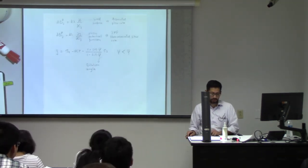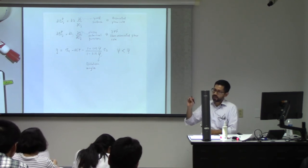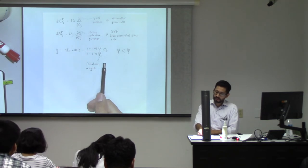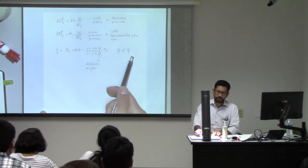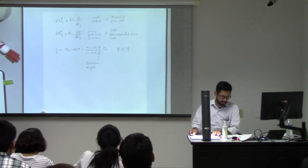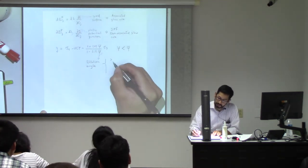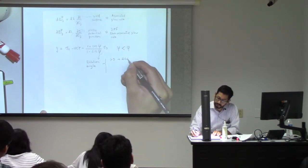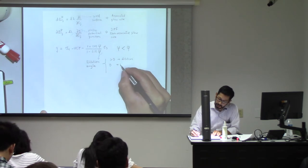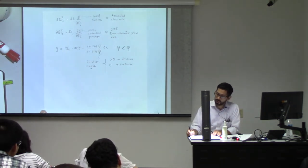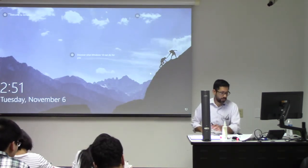The dilation angle is also a parameter you can fit to actual data. In order to predict yield stress we use the Mohr-Coulomb criterion; to predict plastic strains we use this plastic potential function. If the dilation angle is higher than zero, that means dilation. If the dilation angle equals zero, that means no change of volume — isochoric evolution. And if the dilation angle is less than zero, that means contraction.